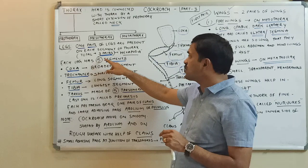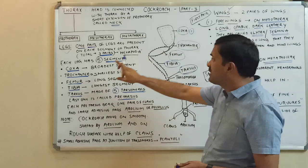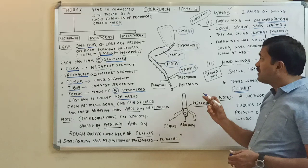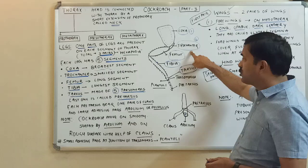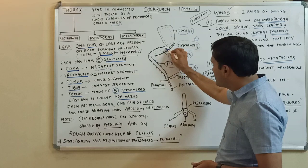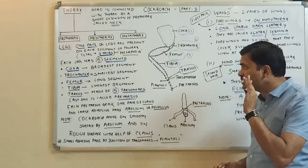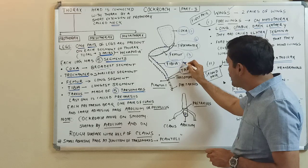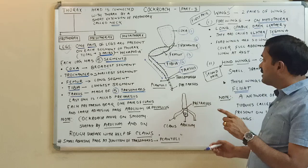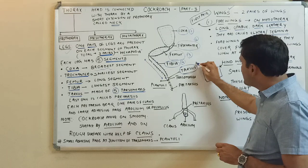Each leg of the cockroach consists of five segments. The first segment is the coxa, which is the broadest segment. The second segment is the trochanter, which is the smallest segment. The third segment is the femur, which is a long segment. The fourth segment is the tibia, which is the longest segment.